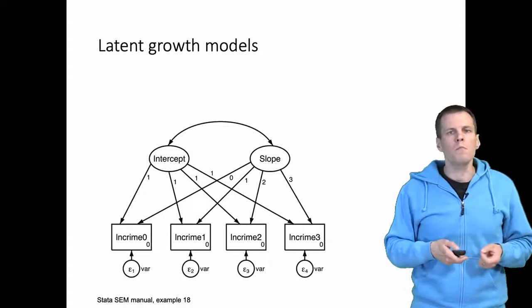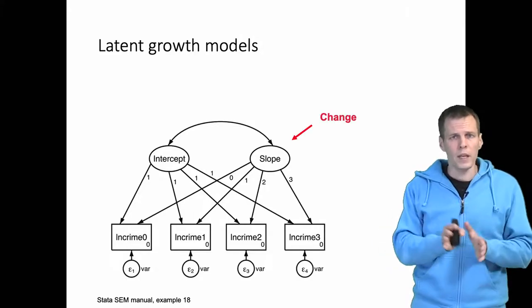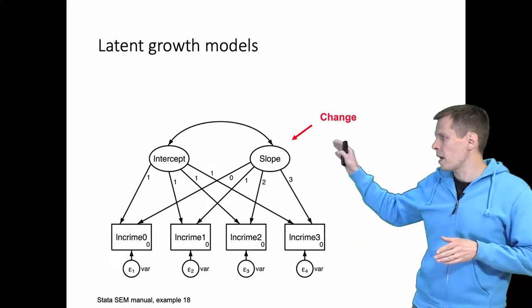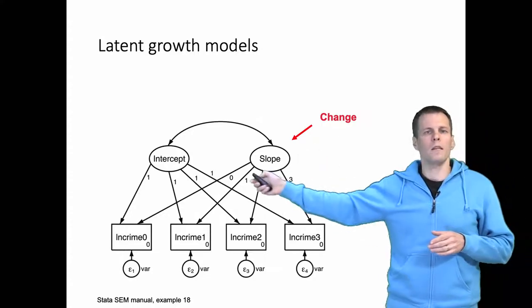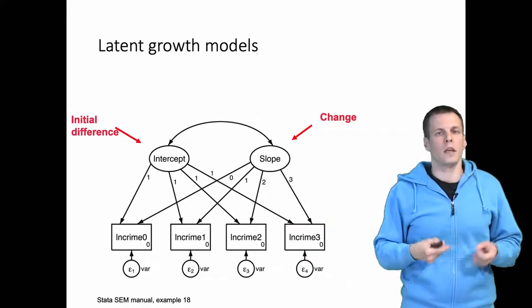How do we interpret this model? The slope latent variable is the effect of change, and this intercept latent variable is the initial difference.